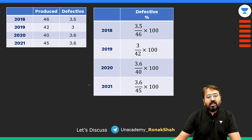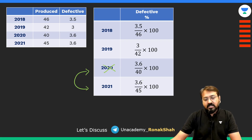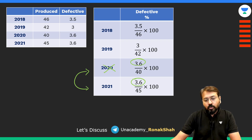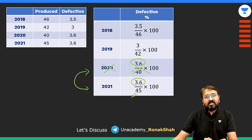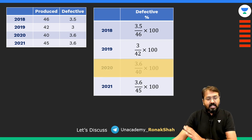Here are the percentage values we need to compare. It is very easy to figure out that if we compare 2020 and 2021, we can straight away eliminate 2020. Why? Because in both years the number of defective laptops was 3,600, while the denominator is far larger in 2020 and far smaller in 2021. So of course 2020 cannot be the smallest percentage value. We can straight away eliminate year 2020.